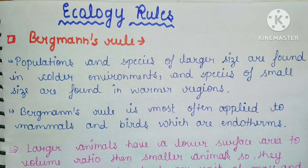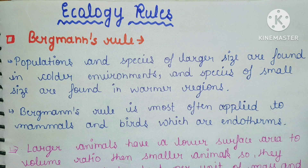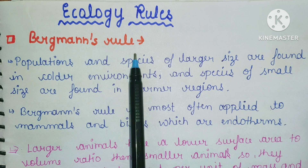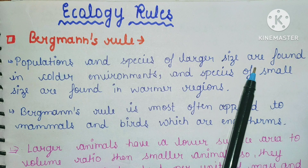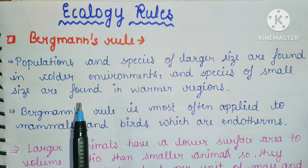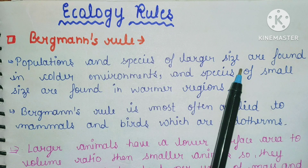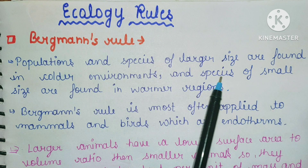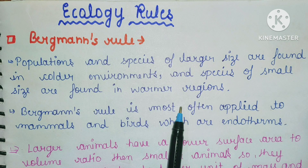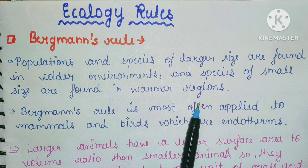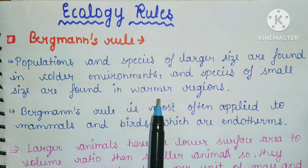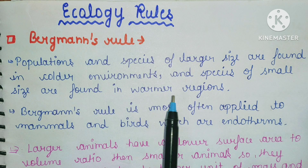The first rule in ecology is Bergmann's rule, named after the scientist who discovered it. Populations or species of large size are found in colder environments, and species of small size are found in warmer regions — for example, small species like mouse or rat are found in warmer regions.